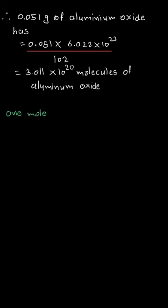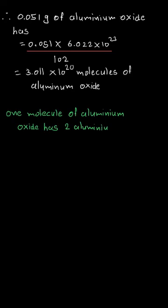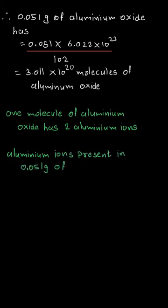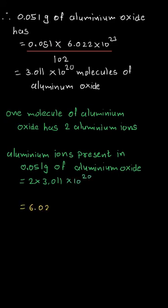Since one formula unit of aluminium oxide contains two aluminium ions (Al₂O₃ has a subscript of 2 for aluminium), the number of aluminium ions present in 0.051 grams of aluminium oxide will be 2 multiplied by 3.011 × 10²⁰.